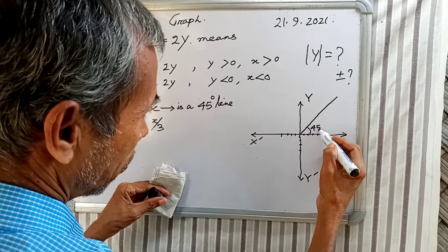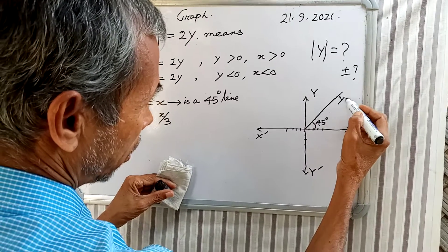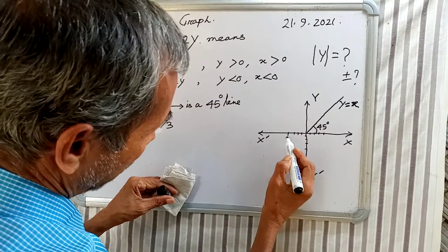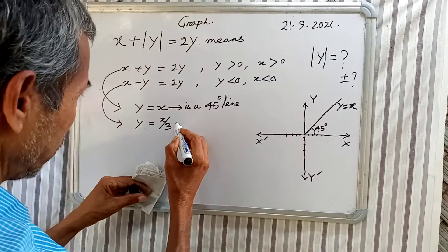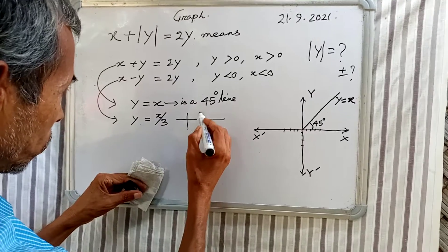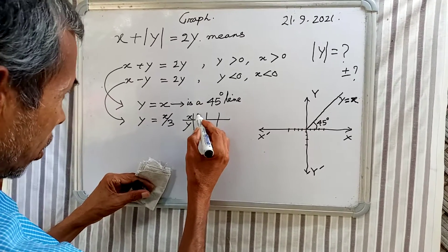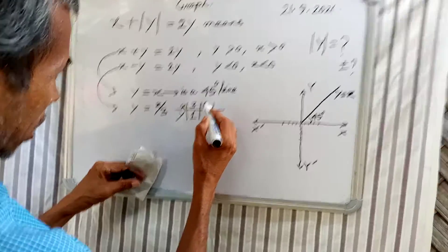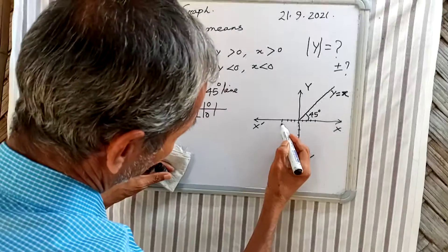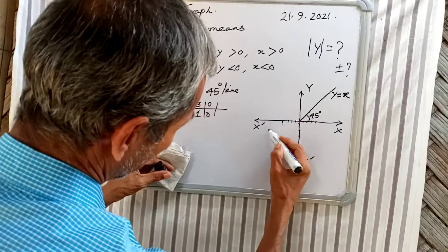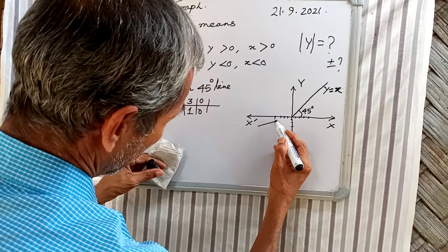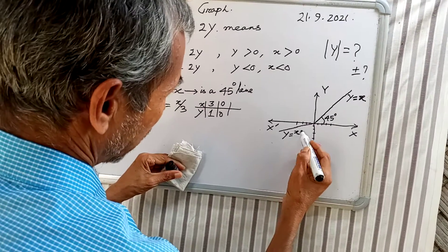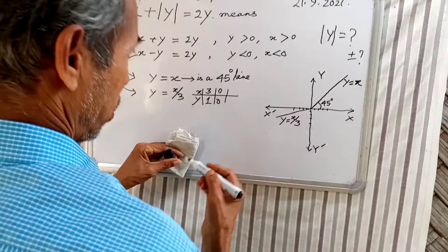This is the 45 degree line y equal to x. Now another point is here: if x equal to 3, then y equal to 1. Therefore such is the point, and this line is y equal to x by 3.